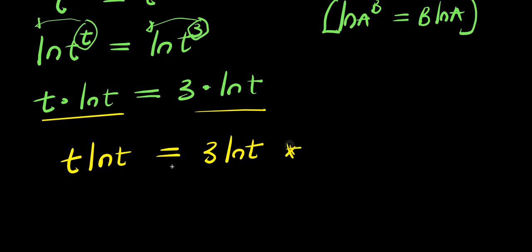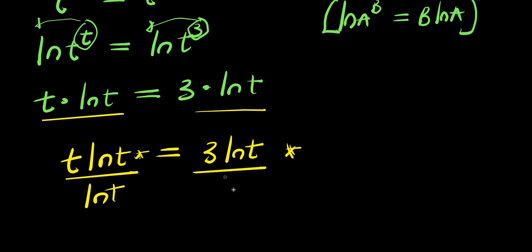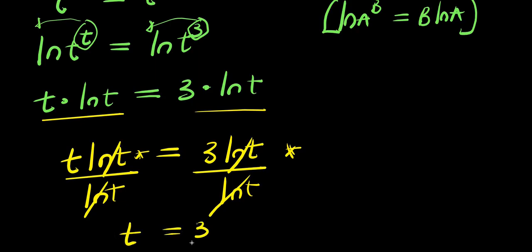Now at this point, what we can do is divide each side by ln of t — cancel this and cancel this — so I have t equals 3.